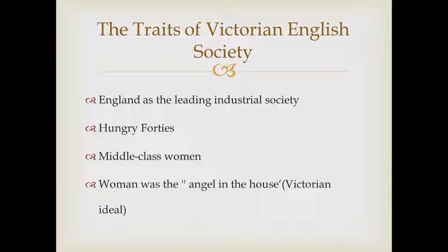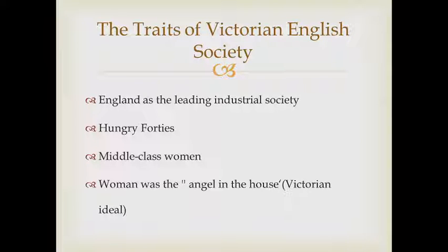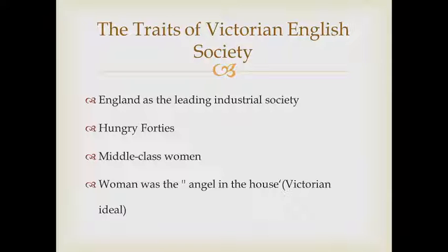According to the Victorian ideal, a woman was 'the angel in the house.' She was expected to be submissive rather than dominant, chaste, physically frail, religious, self-denying, and capable of tremendous self-discipline. Armed with these characteristics, Victorian women were seen to represent morality and strength against the harsh, competitive world of business — qualities men could not afford to possess themselves.